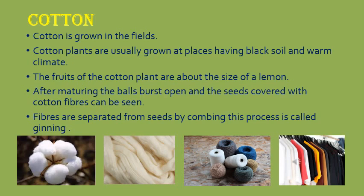Cotton plants are about 1 to 2 meters in height. Cotton plants take 60 days in flowering. The cotton flower turns into fruit. Fruits of cotton are spherical in shape with a lemon-like size. Cotton fruits are called cotton bolls. After maturing, the cotton bolls burst open and seeds covered with cotton fibers become visible. The color of cotton fiber is white and is called cotton wool. A cotton field looks like a field covered with snow.